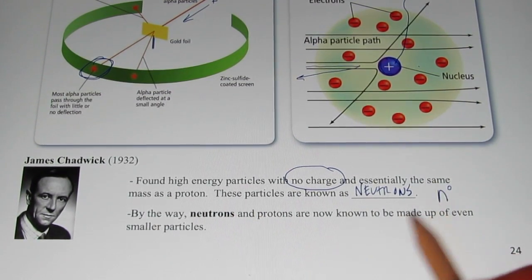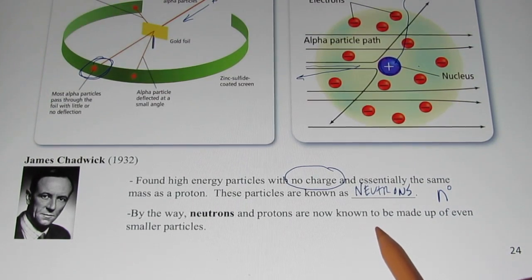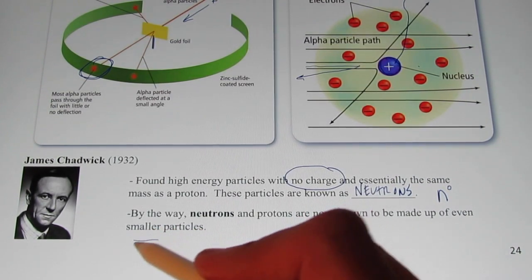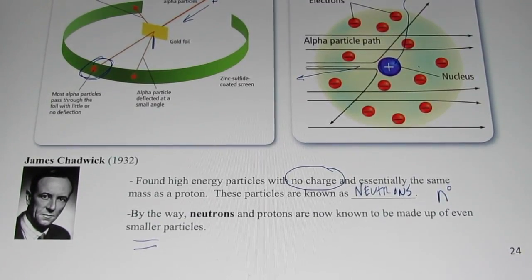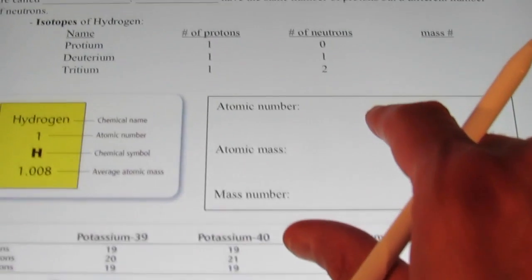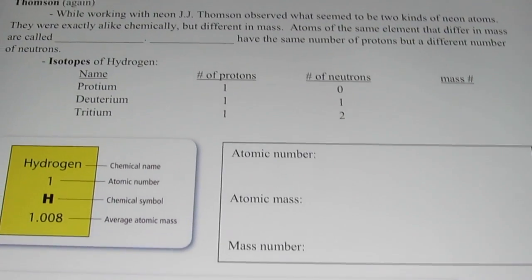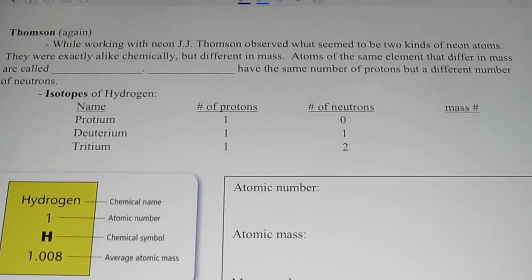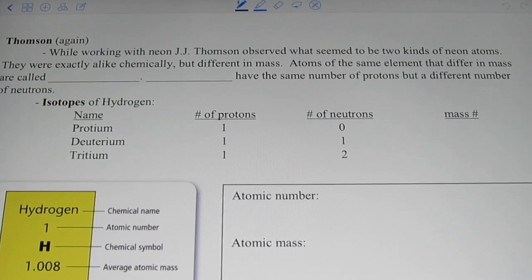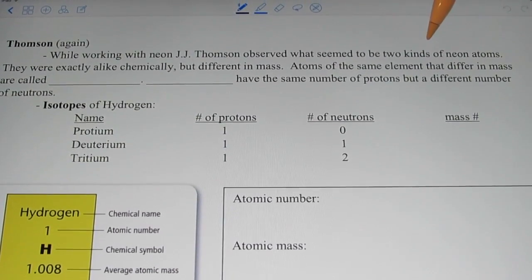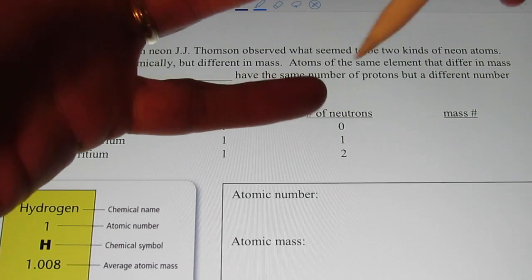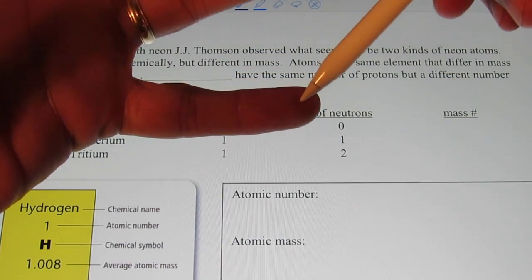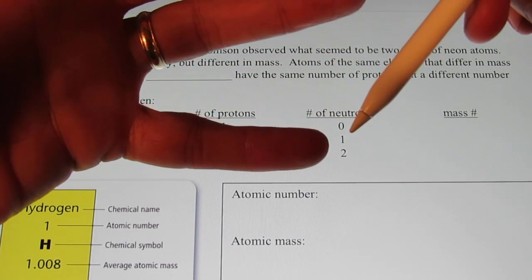Neutrons and protons are now known to be made up of even smaller particles that we don't worry about at this level. Now, J.J. Thompson again, while working with neon, observed that there were actually two different kinds of neon atoms. If you remember, Dalton said atoms of the same element were identical to each other.